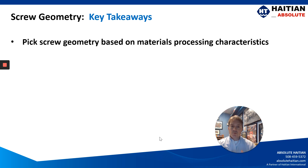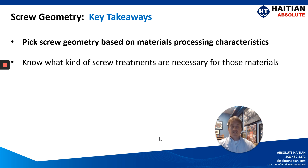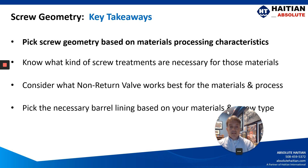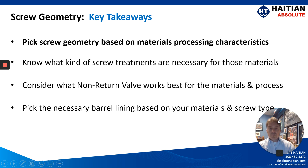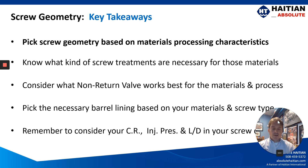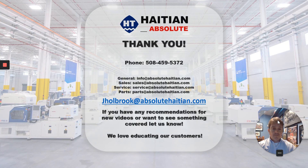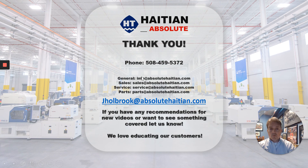Key takeaways: pick your screw geometry based on material processing characteristics; know what screw treatments are necessary for those materials; consider which non-return valve works best for your materials and application; pick the necessary barrel linings based on your materials and screw type; and remember to consider your compression ratio, injection pressures, and L over D on your screw. Upcoming videos will cover fast cycle machines, auxiliary machine functions, and automation. Please reach out with questions via the number or email shown on screen. Thank you for joining us.